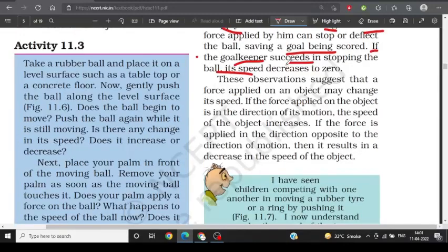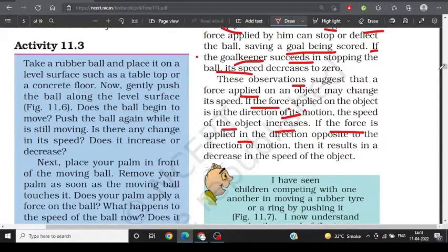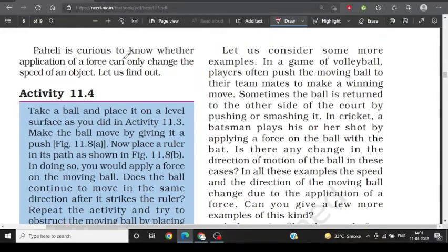This observation suggests that when force is applied on an object, its speed will change. If we apply force in the direction of motion, the speed of the object increases. Force applied in the direction opposite to the direction of motion will result in a decrease in speed. Let's consider some more examples of the application of force.